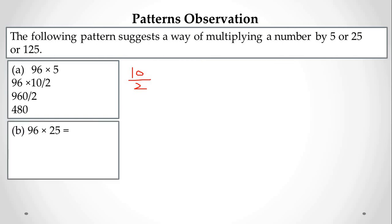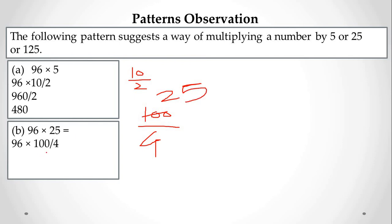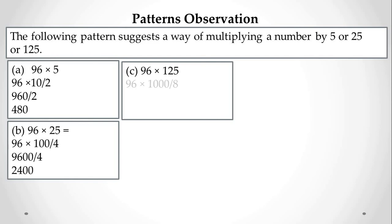For 96 × 25: write 25 as 100÷4. So calculate 96 × 100 = 9600, then divide by 4 to get 2400. For 96 × 125: write 125 as 1000÷8. So 96 × 1000 = 96000, then divide by 8 to get 12000. The idea is to rewrite the multiplier as a power of ten divided by a small number, making the calculation easy.